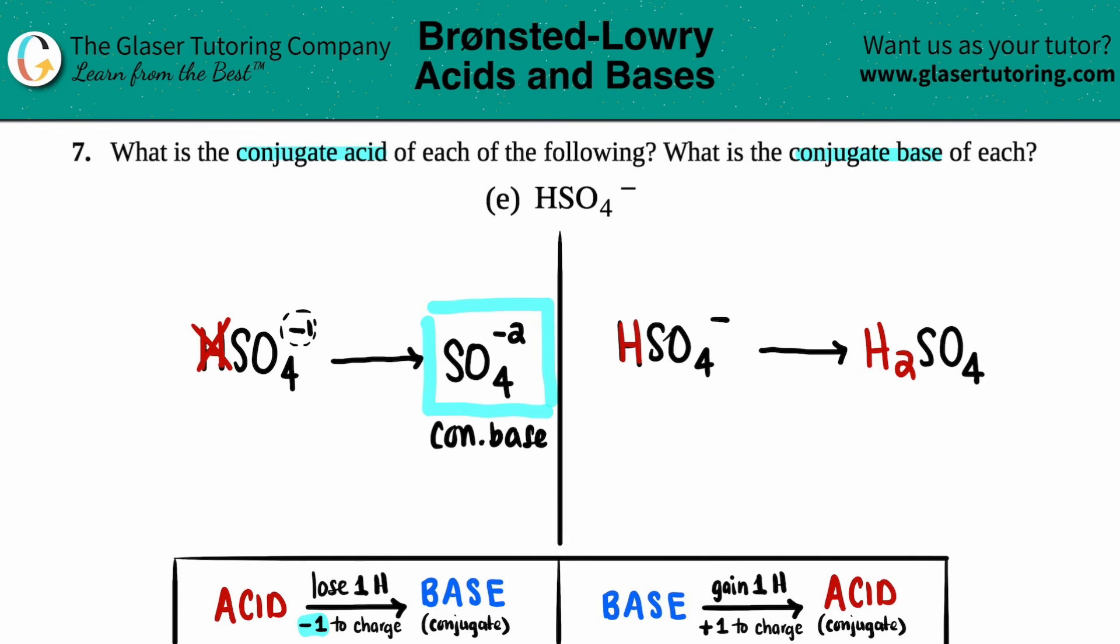And now we just have to correct the charge. In this case, if you're turning it into an acid, you always plus one to the charge. It was a negative one, just like we said before. So negative one plus one, negative one plus one is zero. So I don't have to write a charge.